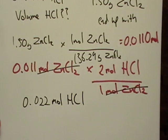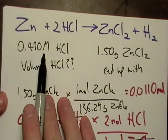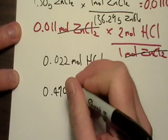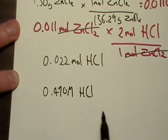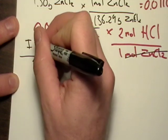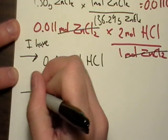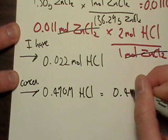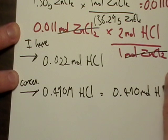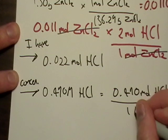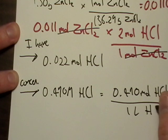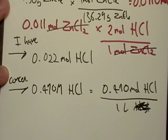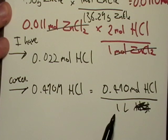If we go back, here's my concentration and here's how much I have. Remember, this is 0.470 moles of hydrochloric acid per one liter. It looks like we have a conversion factor right here.